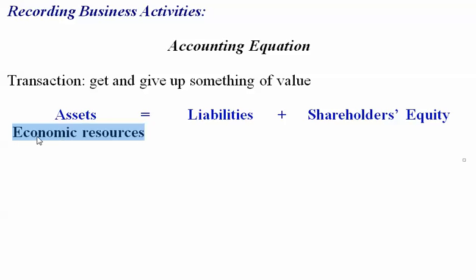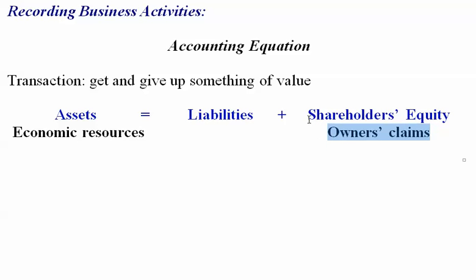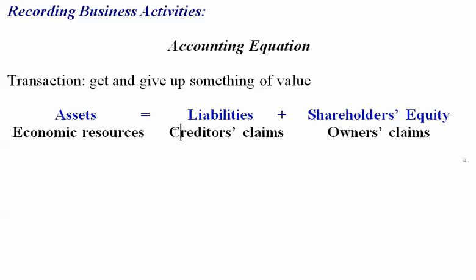Where these economic resources come from is from financing activities. When a business first starts, you're going to receive money from owners, so some of the economic resources the owners have claims to — that's what's represented under shareholders' equity. We also talked about financing activities where you borrow money, and that would be the amount that the creditors have claims to.